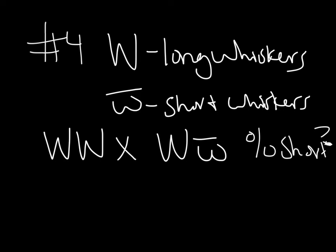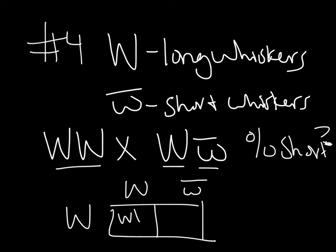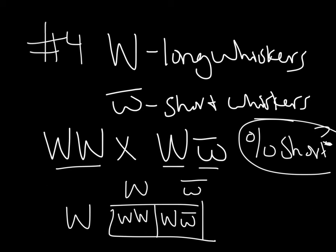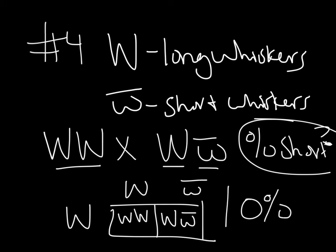We can do a Punnett square. This homozygous dominant parent only gives big W's to offspring. The heterozygous parent can give a big W or a little w. Looking at our genotype outcomes: big W big W is long whiskers, and big W little w is also long whiskers. So 100% of our offspring should have long whiskers, which means the answer to the question is zero percent of offspring will have short whiskers from this cross.